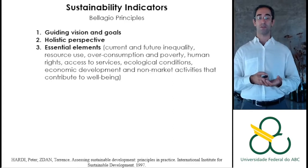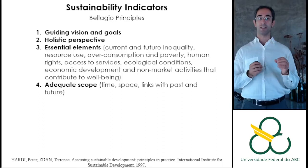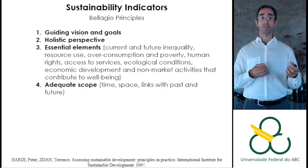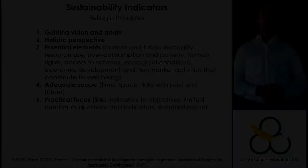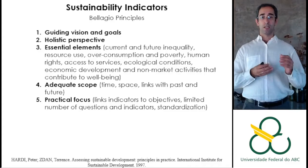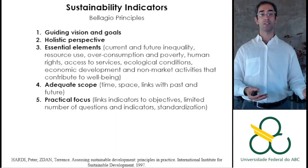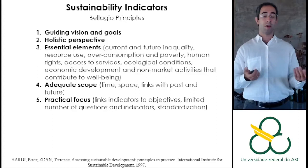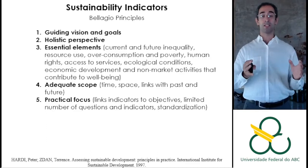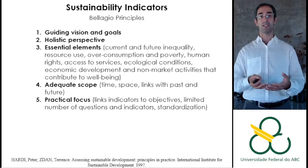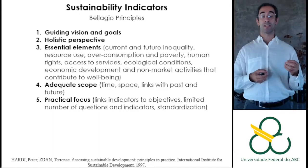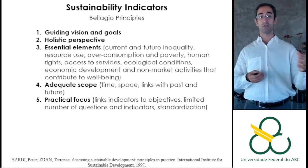Indicators need to have an adequate scope — showing how characteristics differentiate in time and space, linking the past with the future you want to achieve. They need a practical focus: linking what we can do to change and achieve our objective. If we cannot do anything to change an indicator, why choose it? They should be limited in number, because too many indicators risk losing focus and spending too much effort updating them rather than changing them. It is important for them to be standardized, measured the same way in the past, future, and every place they are applied.